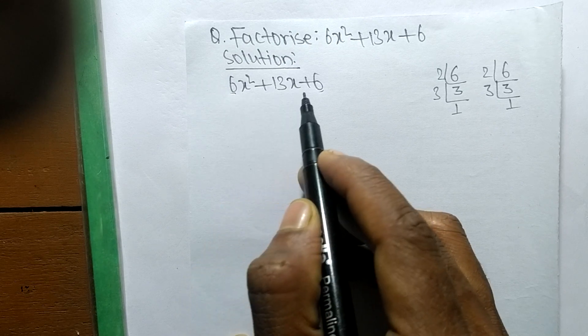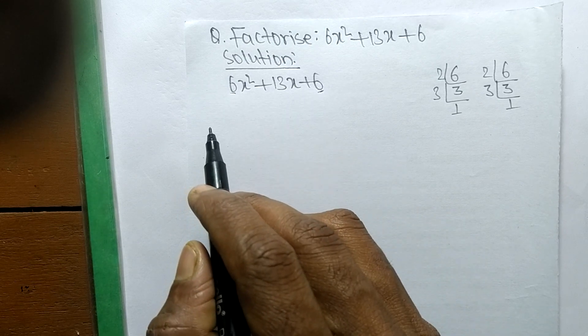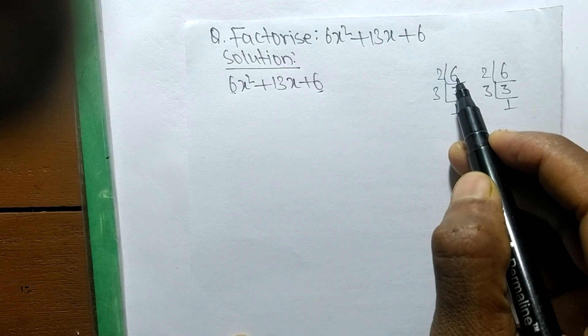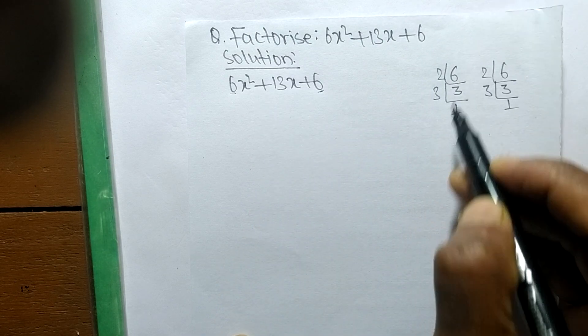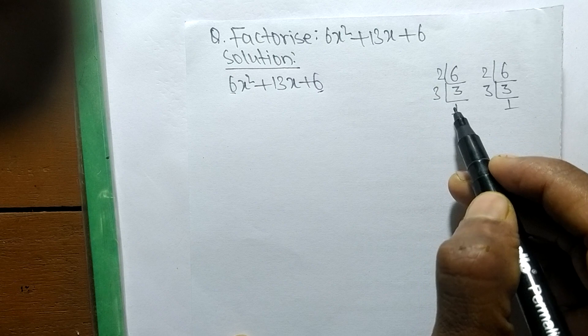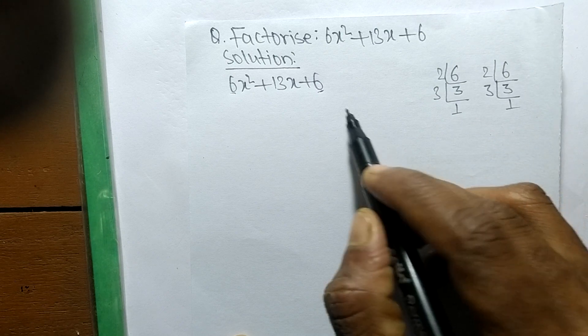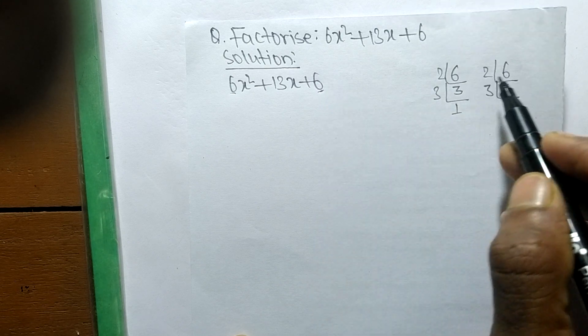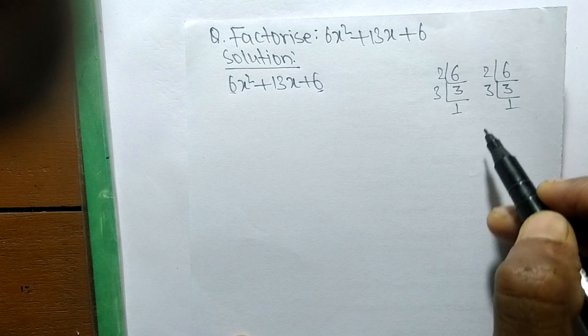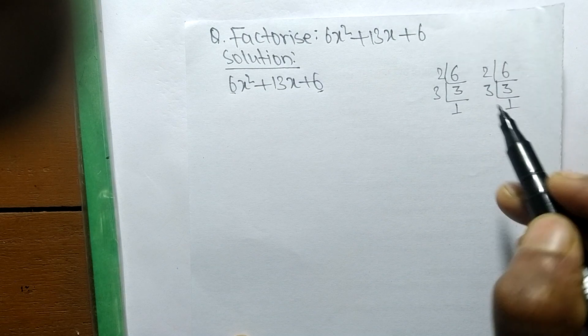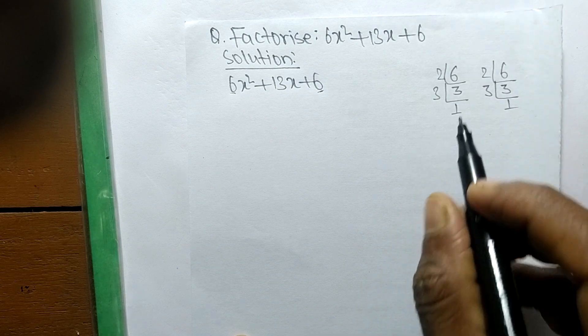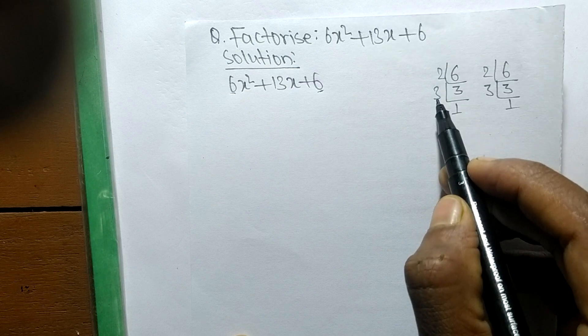So the prime factors of first number 6 is 2 times 3 means 6, like as 3 times 1 means 3. Like as the prime factors of again 6 is 2 times 3 means 6, like as 3 times 1 means 3. So now we have the numbers of 2, 3, 1 and 2, 3, 1.